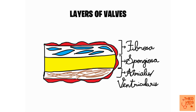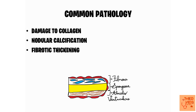It is essential to know the composition and layers of the valves to understand valve pathology. There are three common things that can happen: first, damage to the collagen can cause stiffness of the valves; second, nodular calcification commonly leads to calcific aortic stenosis; and third, the valves can undergo fibrosis and become thickened.